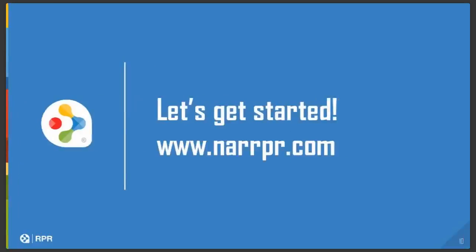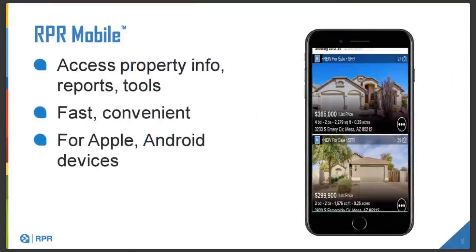To get started, go to www.narrpr.com. This is a member service, so anyone who is a Realtor member has access to this system. There is also RPR Mobile, where you can download the app on your mobile device — whether Apple or Android. You'll notice that the mobile site is different from the desktop site.